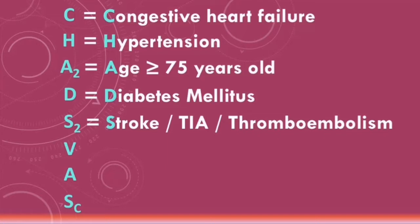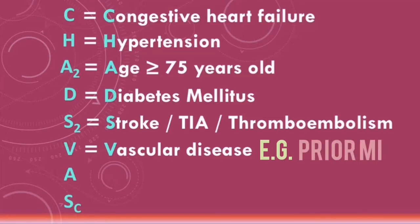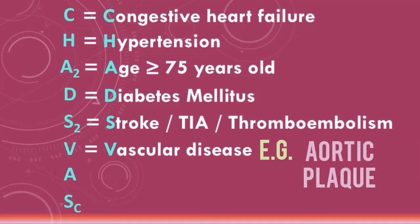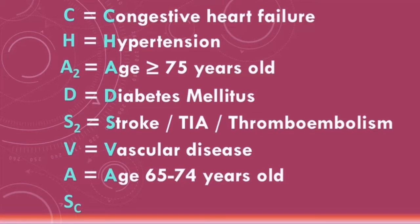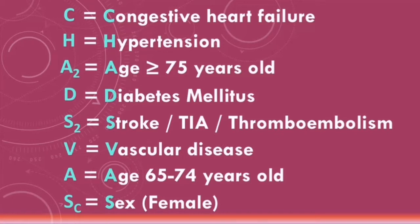V refers to patients who have a history of vascular diseases such as a prior myocardial infarction, peripheral arterial disease, or aortic plaque. The next A refers to patients between the ages of 65 and 74, and the last S refers to sex — specifically patients who are female. These are the risk factors that the CHADS-VASc score uses.